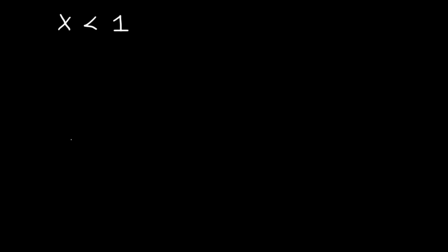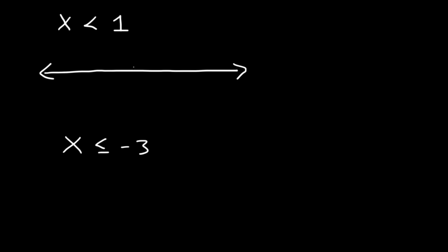Go ahead and try these two examples: x is less than 1, and also x is less than or equal to negative 3. Feel free to pause the video. So here's 0, here's 1. On the left we have negative infinity, on the right positive infinity. So x is less than but not equal to, so we're going to use an open circle. Because it's less than 1, we need to shade towards the left, towards the side with lower values.